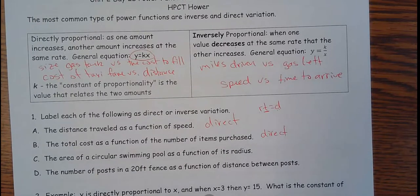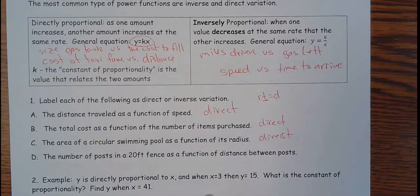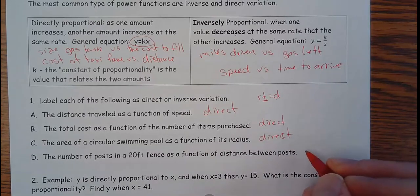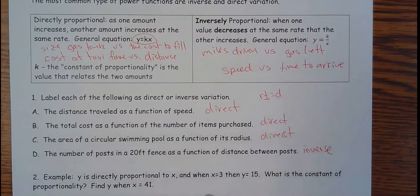The area of a circular swimming pool as a function of its radius. If the radius goes up, the area is also going to go up. So that'd be direct. The number of posts in a 20-foot fence as a function of the distance between the posts. If I space the posts out, will I need more posts or less posts? I'll end up needing less. So as the distance increases, the number of posts decreases. So that's inverse.